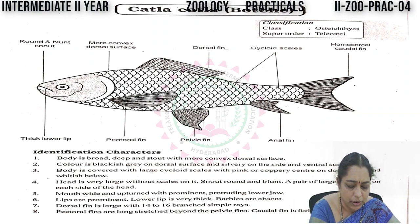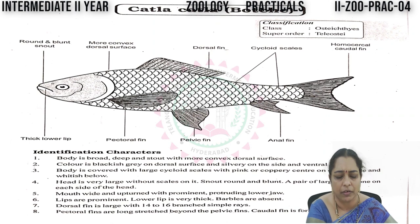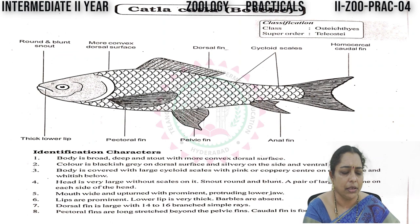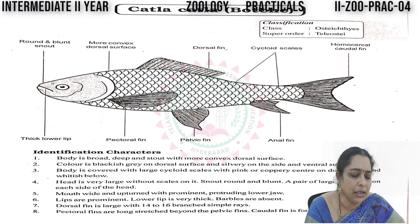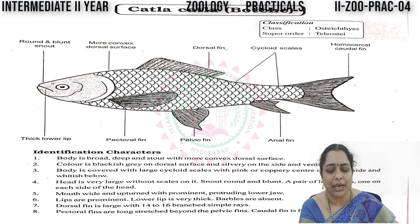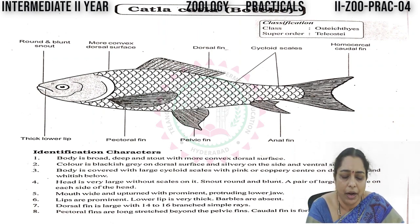The dorsal fin is large with 14 to 16 branched simple rays. The pectoral fins are long, stretching beyond the pelvic fins. The caudal fin is homocercal type with equal lobes — just like in Labio rohita, Katla katla also has a homocercal caudal fin, meaning a caudal fin with two equal lobes.